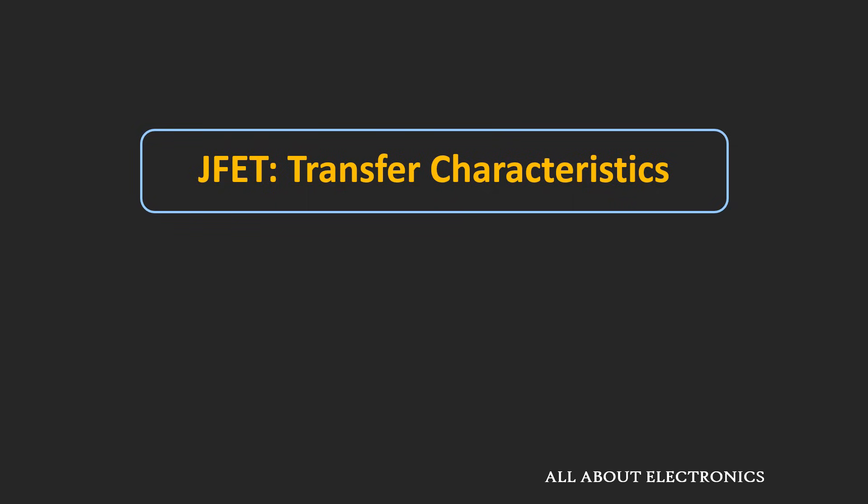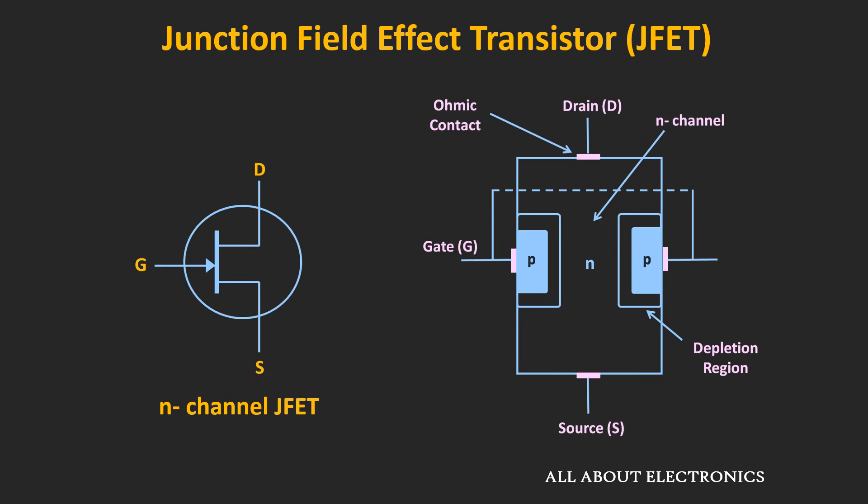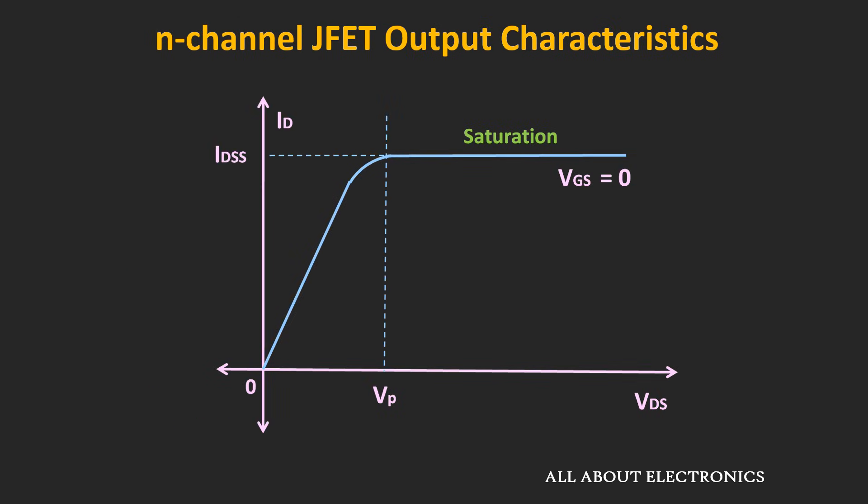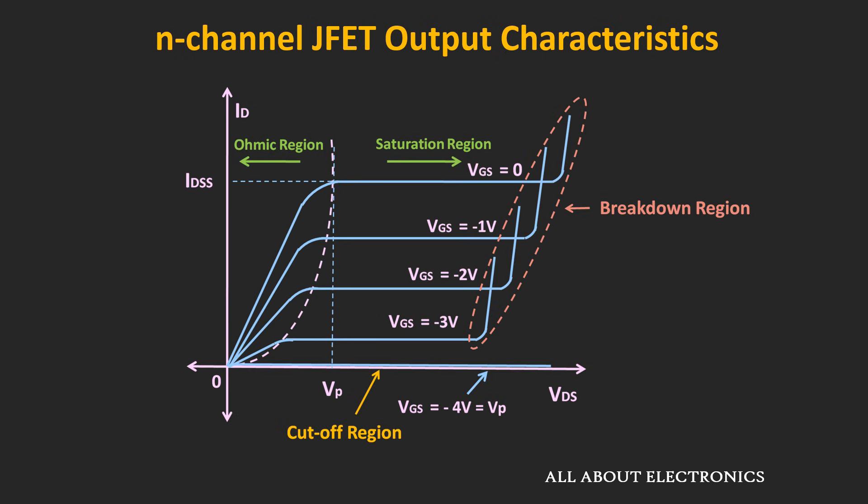Hey friends, welcome to the YouTube channel ALL ABOUT ELECTRONICS. In the previous video, we have seen the working of the N channel as well as the P channel JFET. And then we have discussed the output characteristic or the drain curves for the JFET. Basically, this output characteristic defines the relationship between the two output quantities. In case of the JFET, it is the relationship between the drain current Id and the voltage Vds. This output characteristic is obtained for the fixed value of Vgs. So in the previous video, we have found the output characteristics of this JFET for the different values of Vgs.